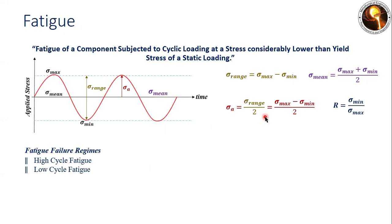Another parameter: when the specimen is operated well below the yield strength under static loading conditions, it runs for a higher number of cycles — approximately one million cycles or more. In that case, the specimen is designed for high cycle fatigue. But when the specimen is operated very near to the yield strength, it not only lies in the elastic regime but sometimes also enters the elastic-plastic zone. In that condition, the specimen will sustain fewer cycles — even under one hundred cycles — and is considered designed for low cycle fatigue.